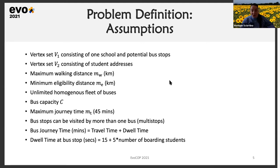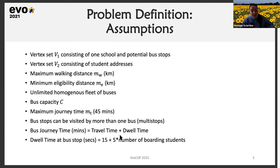We also take the assumption of multi-stops: bus stops can be visited by more than one bus. For example, if a bus stop is very central, there may be too many students for one bus's capacity, so we allow different routes to visit such bus stops. Bus journey times are calculated as the sum of traveling times and dwell times. Dwell time at each stop is calculated via a linear function in seconds: the driver takes 15 seconds to stop the bus, then merges into parallel traffic, and each boarding student takes approximately 5 seconds to board.